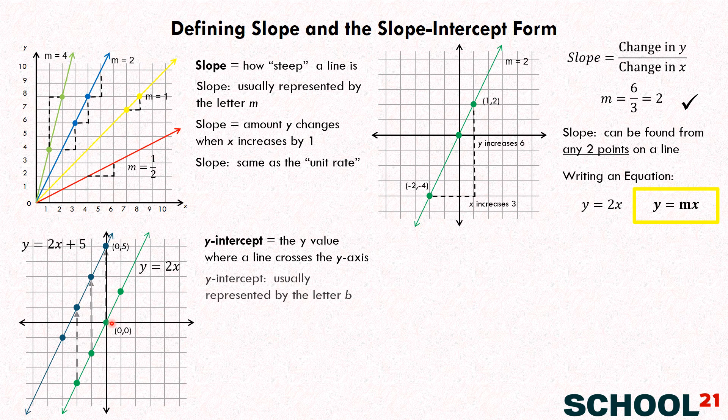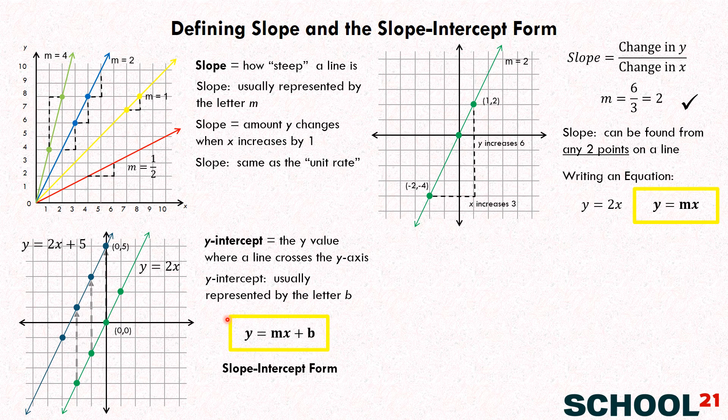So, what we can do now, is we can say, the Y-intercept, it's usually represented by the letter B, and we usually have an equation called Y equals MX plus B, where the Y equals MX is the same over here, but then we add in the B. So, that's what we did over here. We added in the five, because that was the Y-intercept, to get the equation for this line. Here, we added the zero, but we don't need to write the zero, right? So, it's just Y equals 2X. So, both of these equations are actually in the form Y equals MX plus B, which is something called the slope-intercept form, and this is one of the most important equations you'll see in math, because it describes so many really cool things.